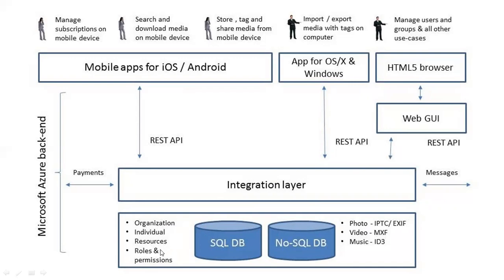The backend includes organization, individual resources, roles and permissions, photo, video, music — these things. On the front-end side you have mobile apps for iOS or Android, mobile apps for Windows, HTML5 browsers, and subscription on mobile devices. So these are the frontend and backend components. This is what HLD looks like for a web application.